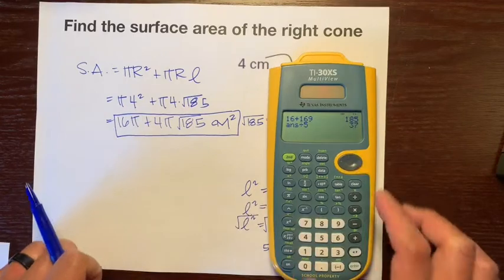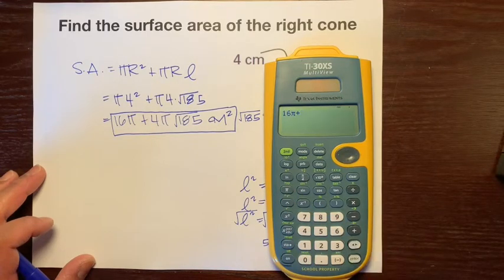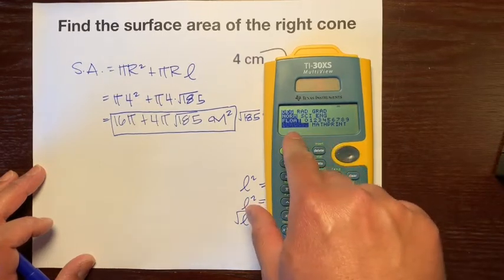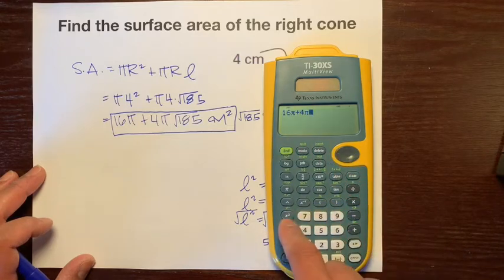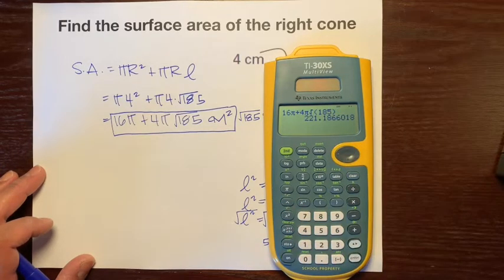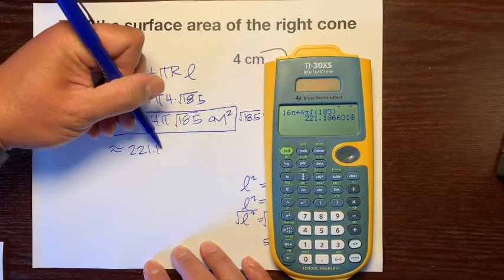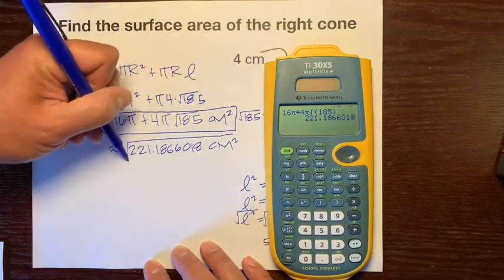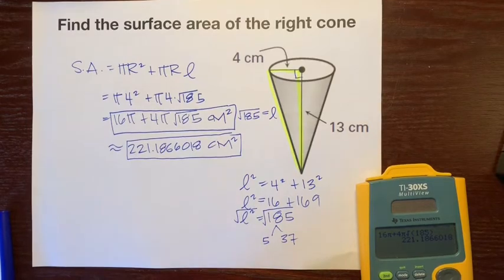But your teacher may want your answer in decimal form. Let's put 16 pi plus - actually, let's check the mode, make sure it's in classic. It's in classic. So let's put 16 pi plus 4 pi, second, square root of 185, and close that parentheses. Let's press enter. Our final answer would be about 221.19 centimeters squared. And that is how you find the surface area of a right cone. Good job.